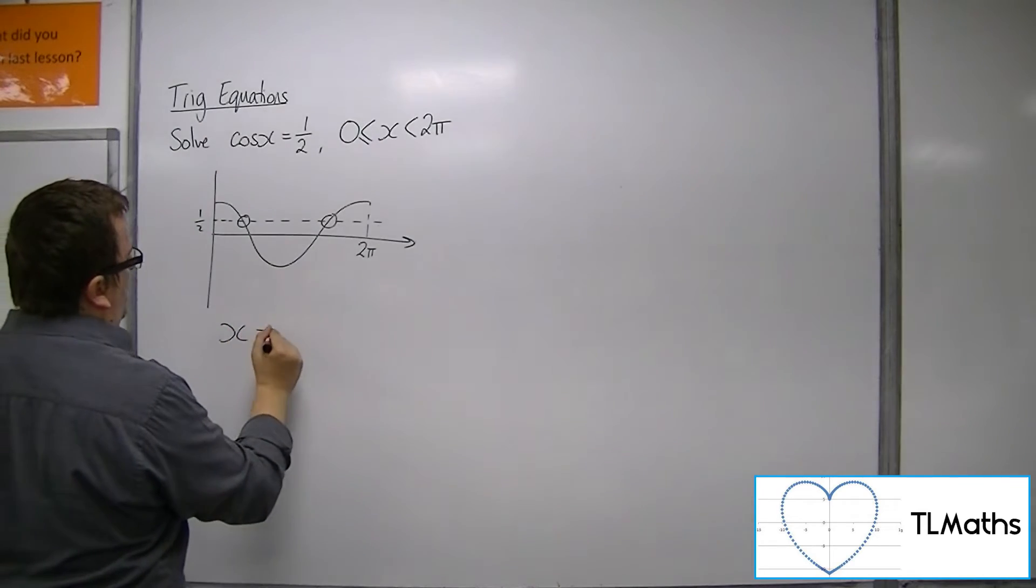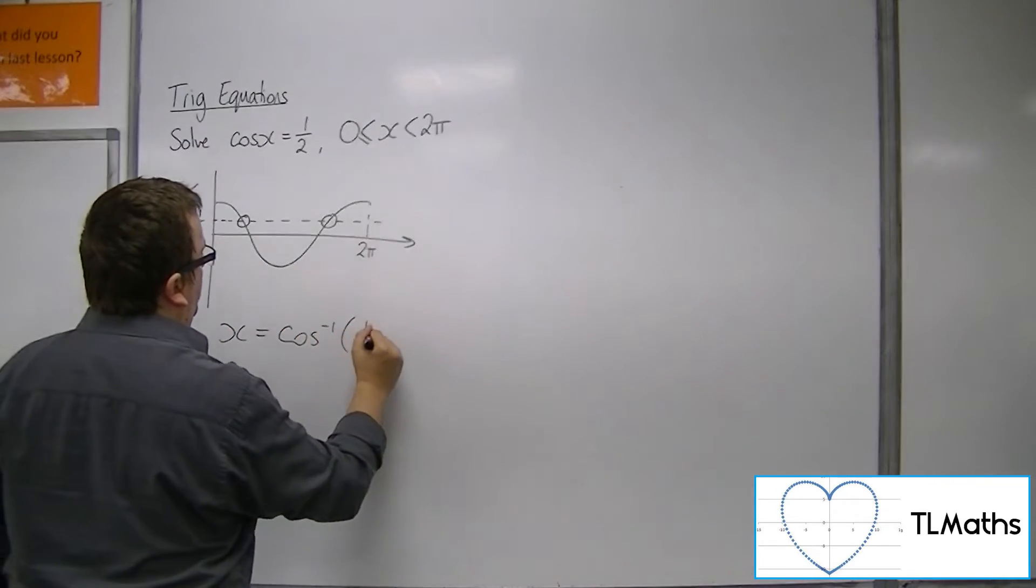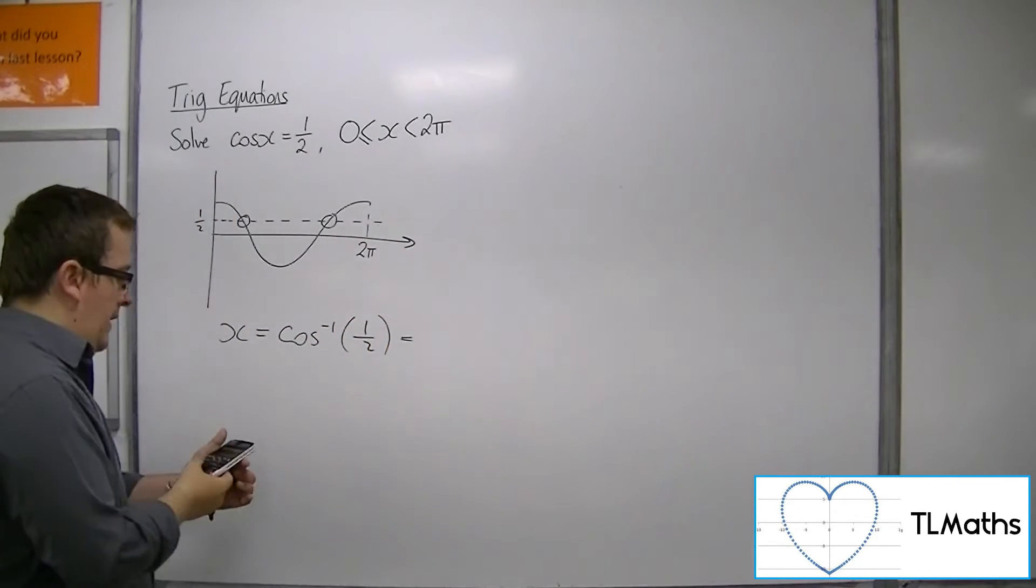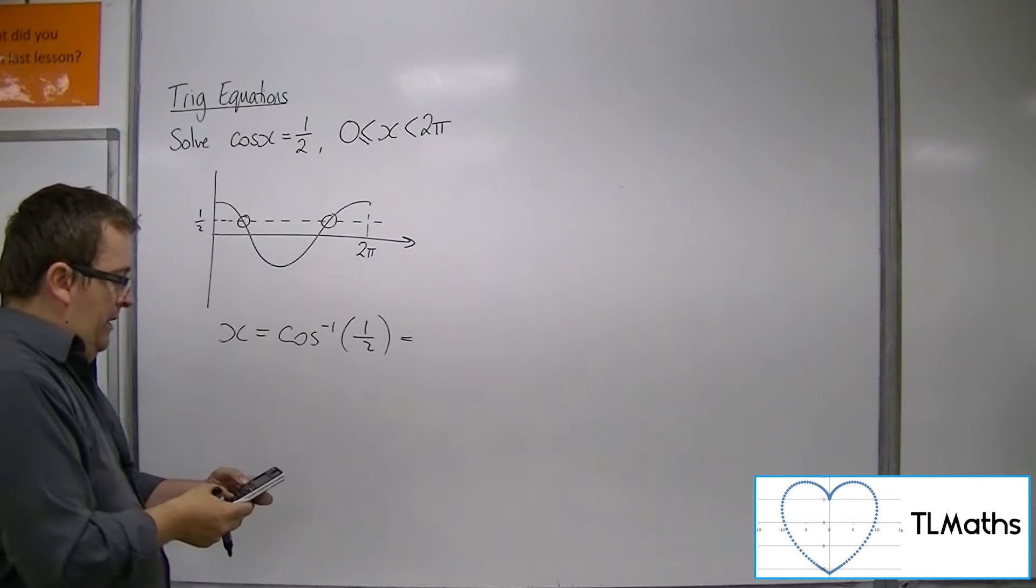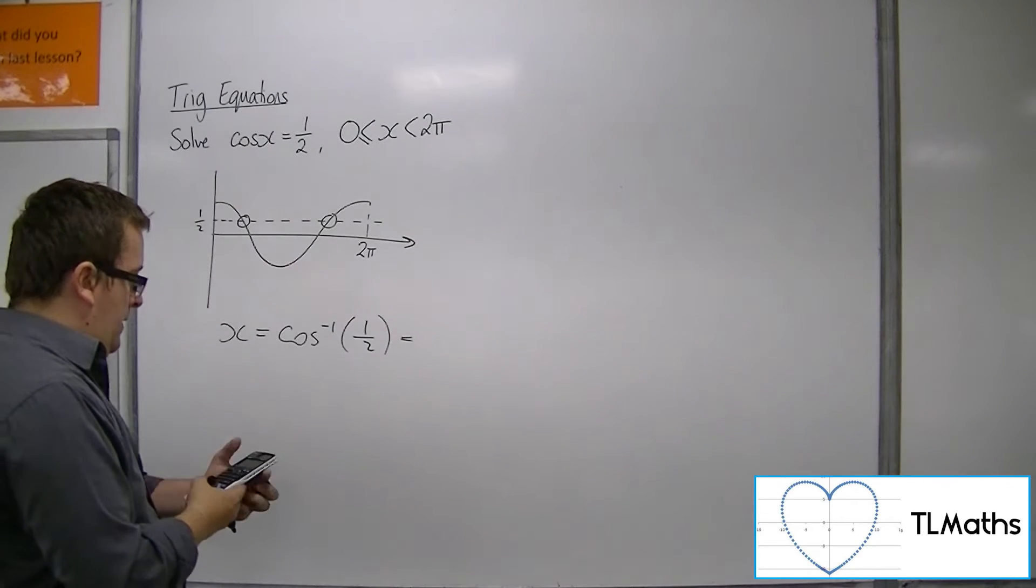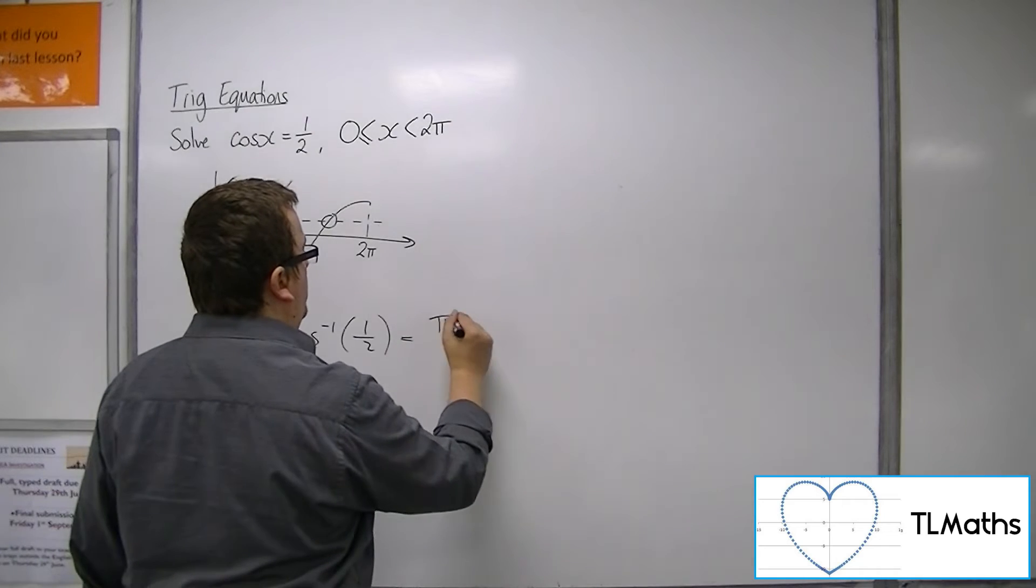So we can find the first solution by finding the inverse cosine of one half. Now make sure your calculator is in radians. Inverse cos of one half is pi over 3 or one third pi.